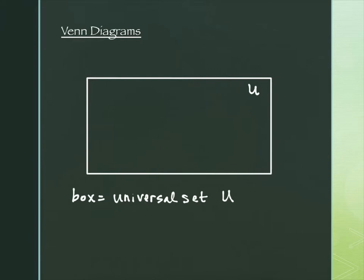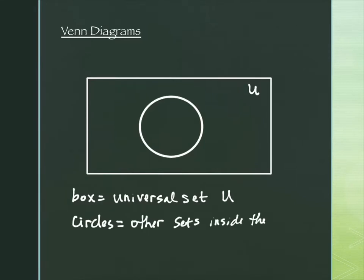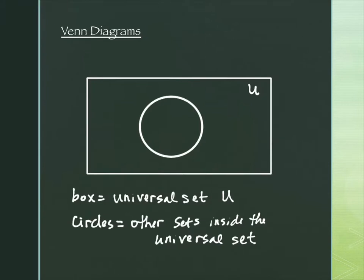Inside the rectangle we have circles — sometimes there are multiple circles. The circles represent other sets inside the universal set. So if this universal set were our classroom, maybe the circle represents all the girls, or maybe it represents freshmen — some smaller grouping within the larger group. If the rectangle were the natural numbers, the circle inside might be the even numbers.